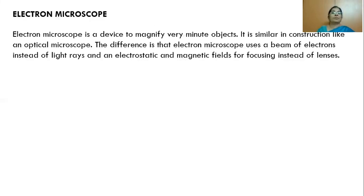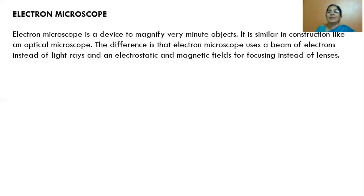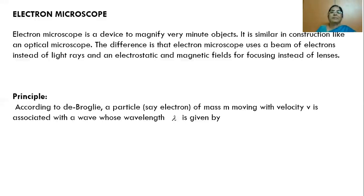The electron microscope is a device to magnify the image of minute objects. It is very similar in construction to an optical microscope. The key difference is that the electron microscope uses a beam of accelerated electrons instead of light rays, and an electrostatic or magnetic field is used for focusing electrons onto a fluorescent screen instead of optical lenses.